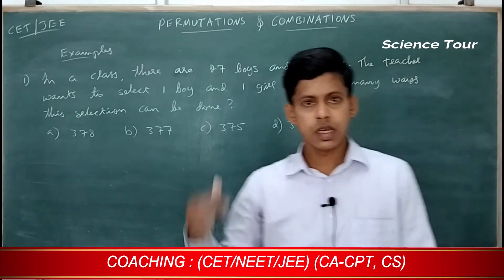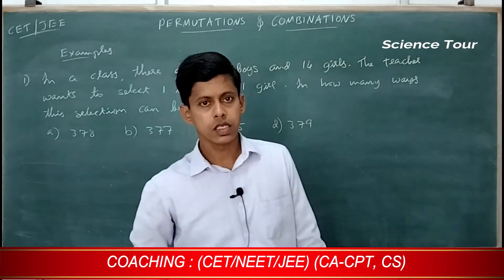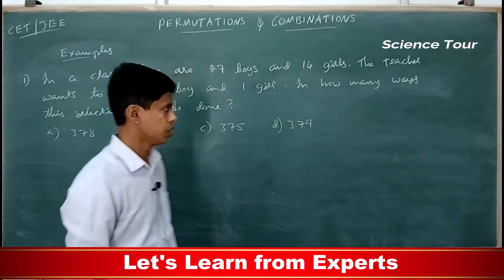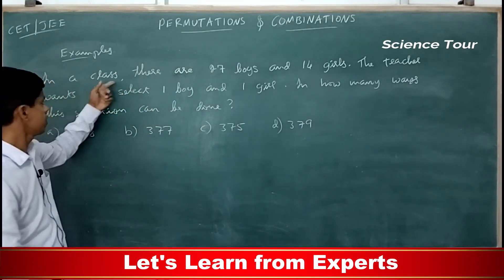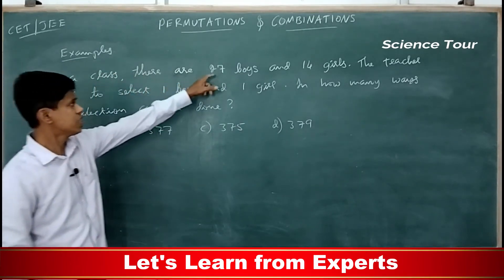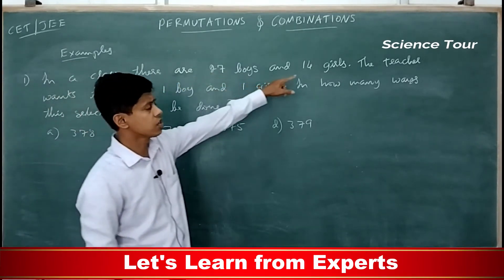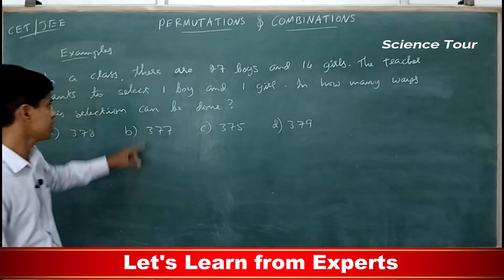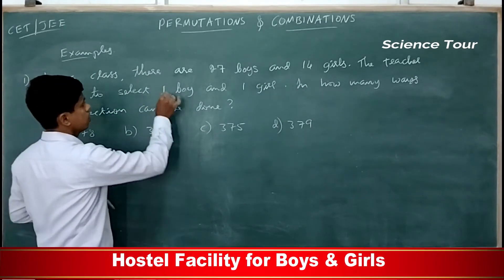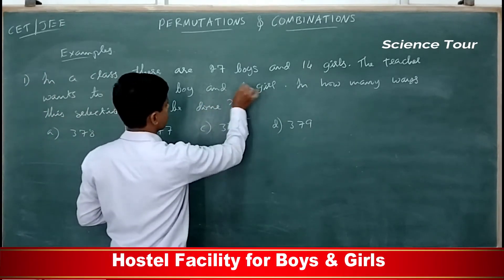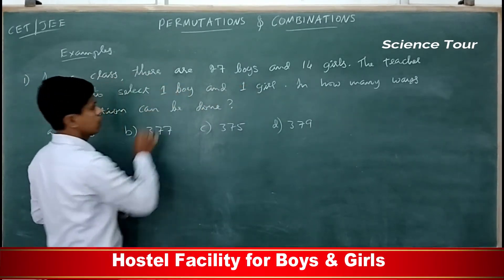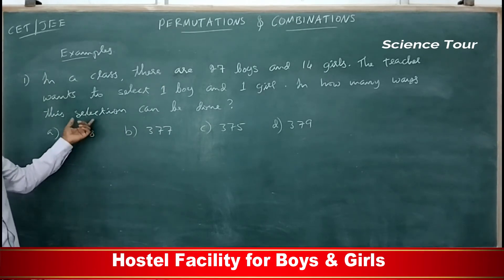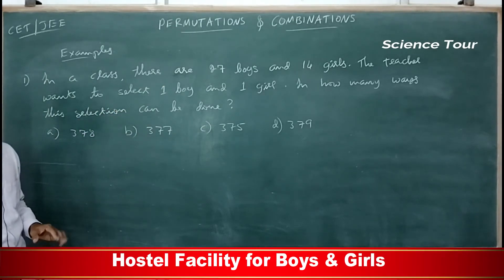Let us look at one example based on the counting principle. You have 27 boys and 14 girls in a class. The teacher wants to select one boy and one girl. In how many ways can this selection be done?